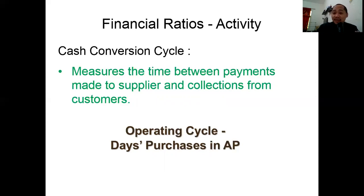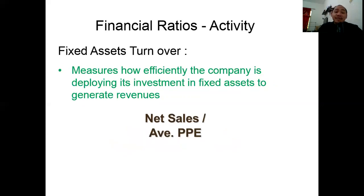Fixed assets turnover measures how efficiently the company is deploying its investment in fixed assets to generate revenues. The formula is: net sales divided by average PP&E, or property, plant, and equipment.